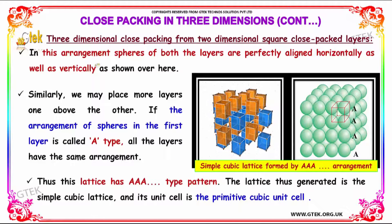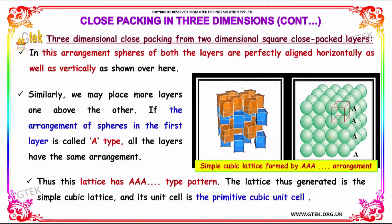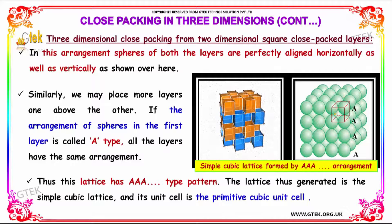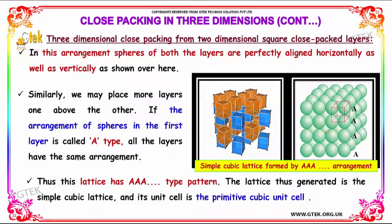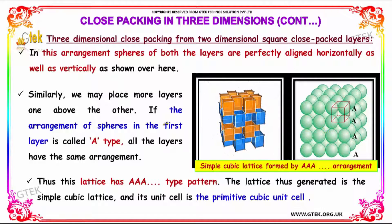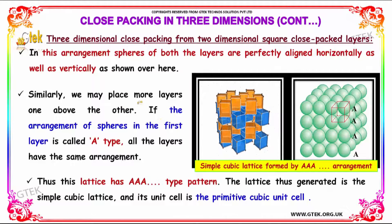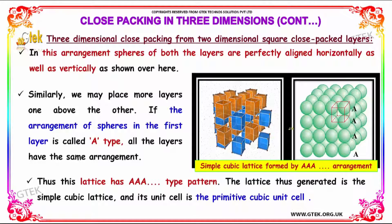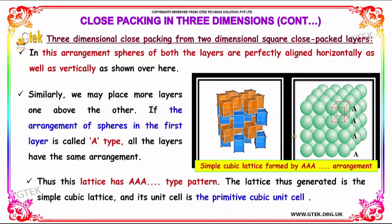If the spheres of both layers are perfectly aligned horizontally as well as vertically, we may similarly place more layers one above the other. If the arrangement of spheres in the first layer is called A-type,